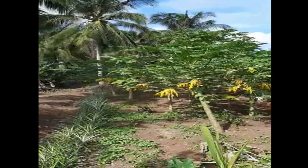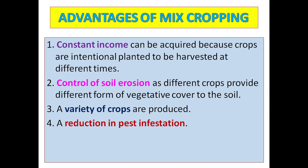The advantages of mixed cropping: number one, constant income can be acquired because crops are intentionally planted to be harvested at different times; number two, control of soil erosion as different crops provide different forms of vegetative cover to the soil; number three, a variety of crops are produced; and number four, a reduction of pest infestation.